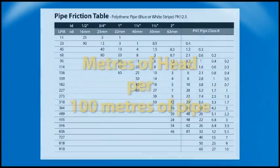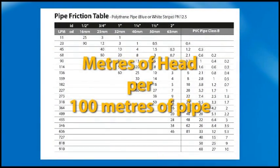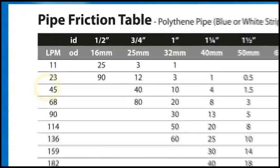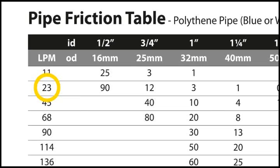A friction table is used to determine friction loss, expressed in metres of head per 100 metres of pipe length. This pipe friction table demonstrates how an increase in pipe diameter can reduce friction loss dramatically. If we select a flow rate of 23 litres per minute, and our pipe diameter is half-inch, the chart shows the friction loss would be 90 metres for each 100 metres of pipe.